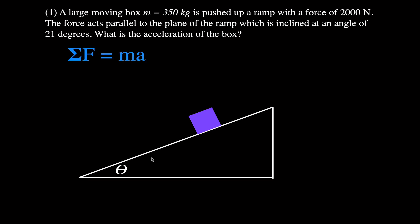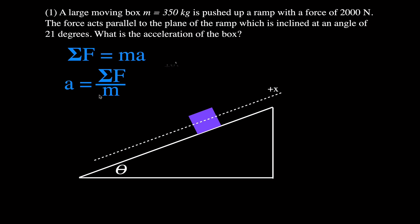We're going to use Newton's second law, which says the sum of the forces, or the net force, is equal to the mass times the acceleration. We want to find the acceleration, so we're going to take the net force and divide it by the mass. We need to figure out which forces are acting on the object, and we have an x-axis and a y-axis where up and to the right is positive on x, and up is positive on y.